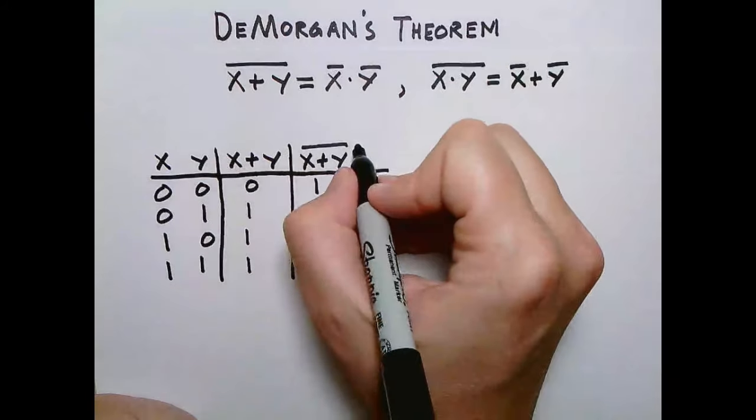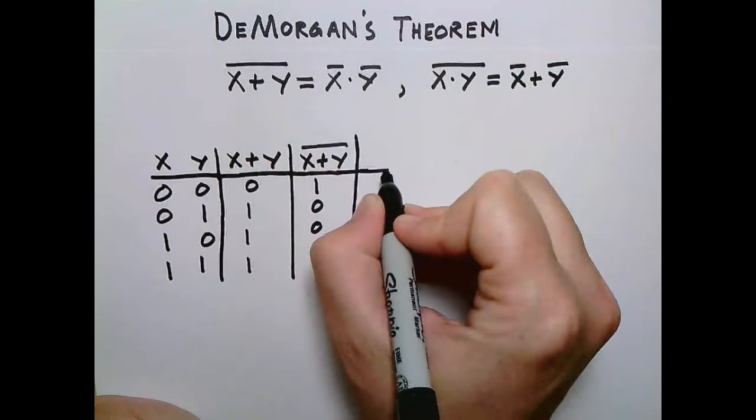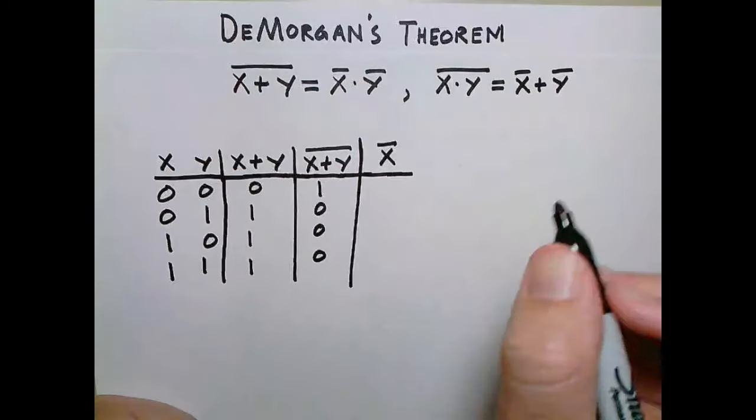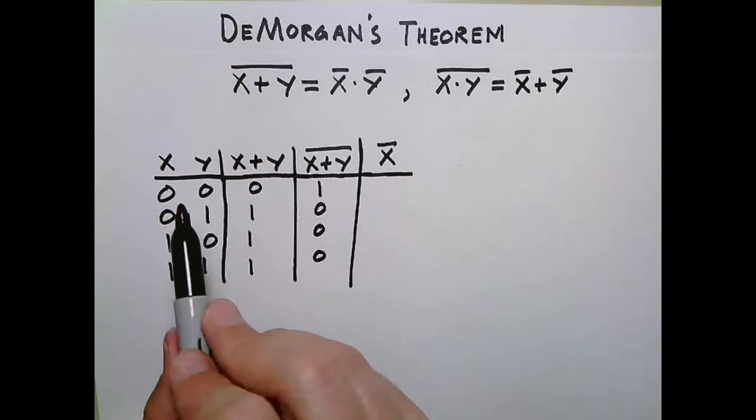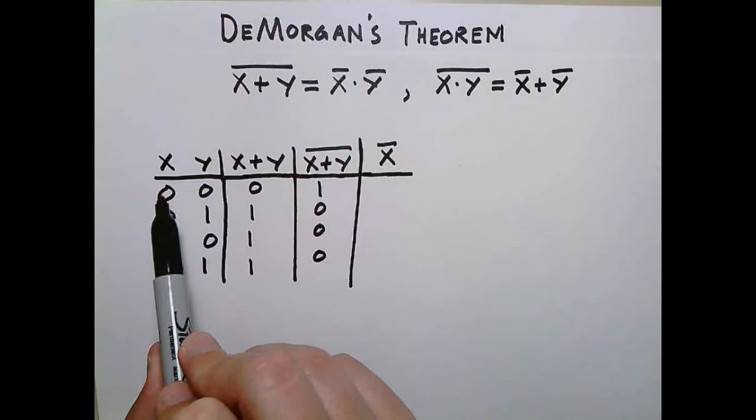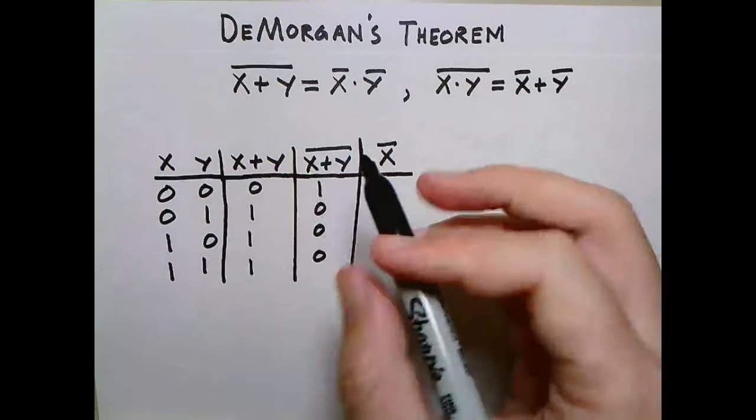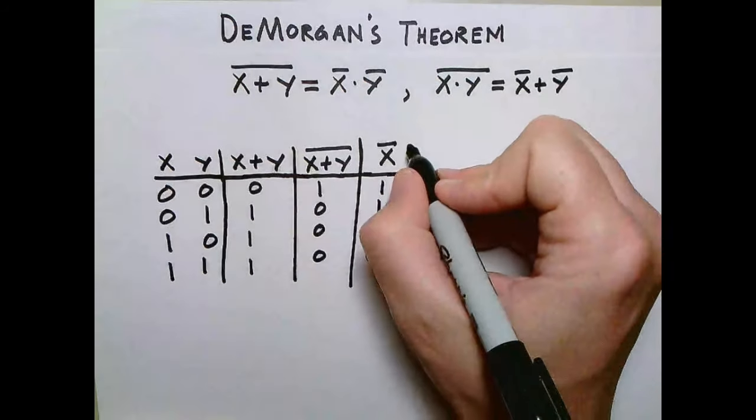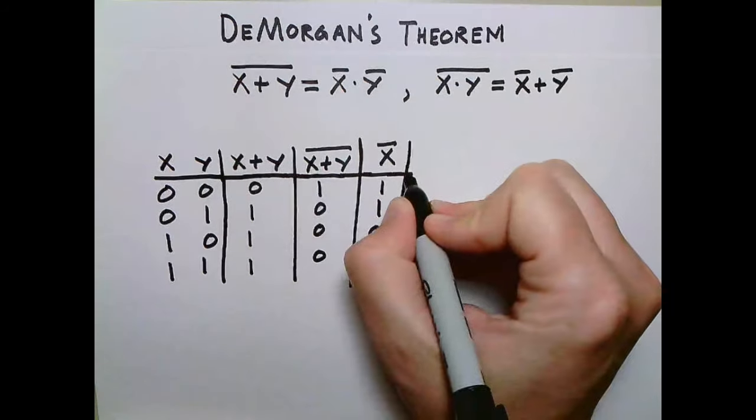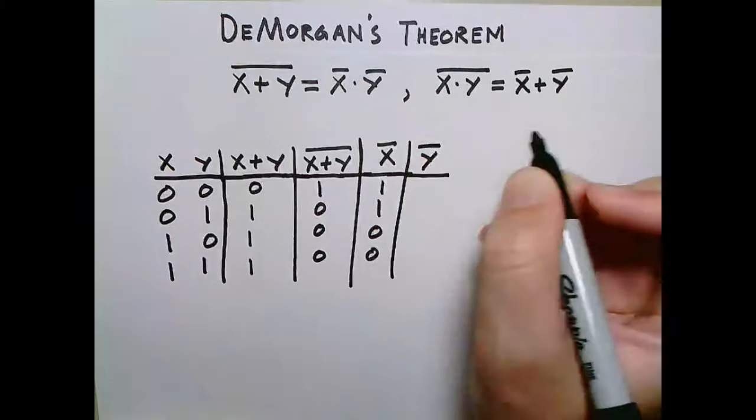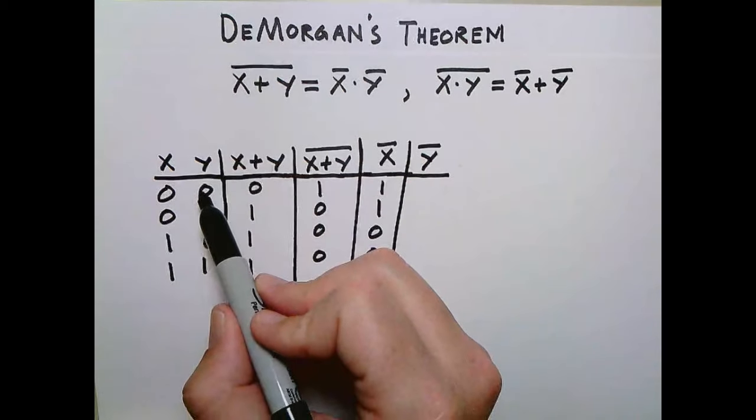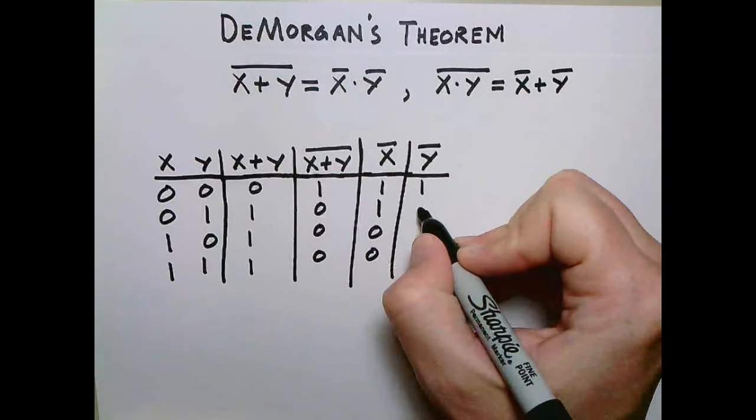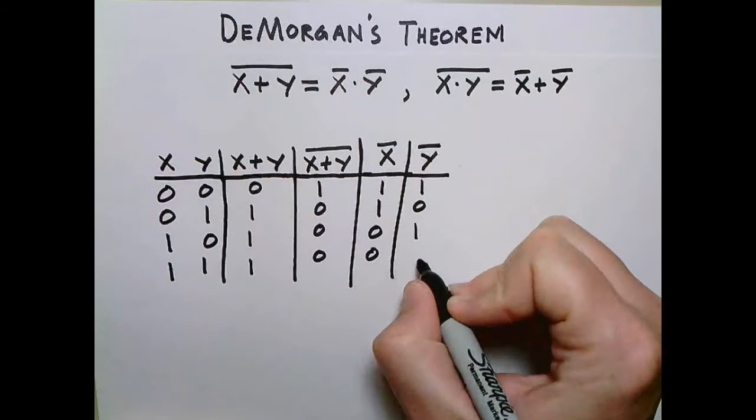So let's keep it going, let's get not x. We've got to look over to this guy, so we went from 0, x went 0, 0, 1, 1, which means not x is going to go 1, 1, 0, 0. Let's do not y. Not y is going to be the opposite of this, so y went 0, 1, 0, 1, so not y is going to go 1, 0, 1, 0.